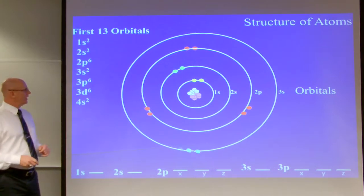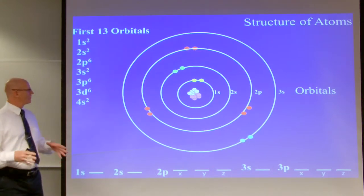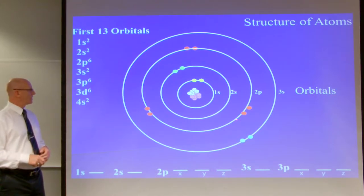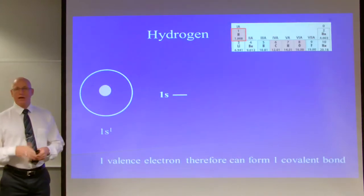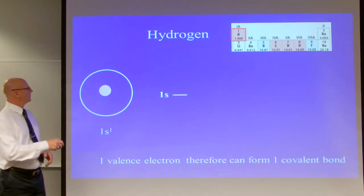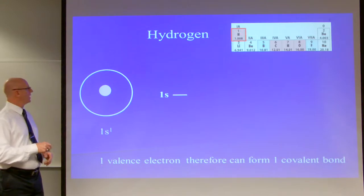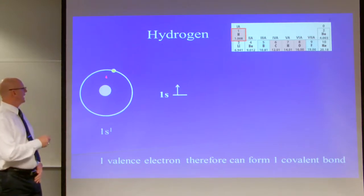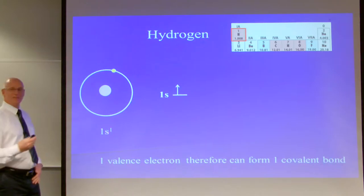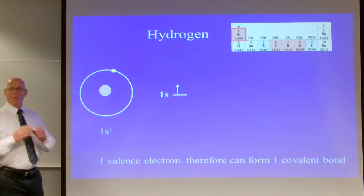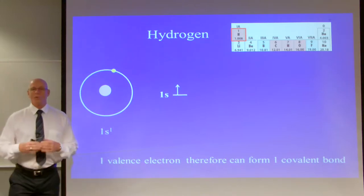We also have the 3s orbital, which has two electrons. We won't go out that far from the nucleus. Starting with the most easy one — hydrogen. Hydrogen has one electron. Scientists fill these shells with the number of electrons that atoms have. Since hydrogen has one electron and one orbital, we put one electron in the 1s orbital. It has one valence electron and therefore can form one covalent bond — electrons like to pair up, so this atom can bond with another electron from another atom, forming a covalent bond.